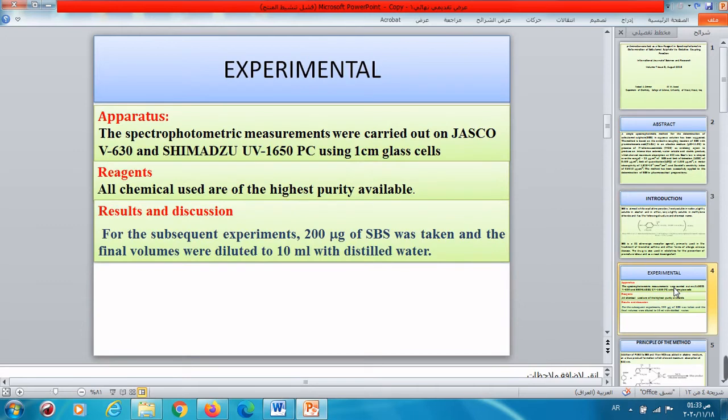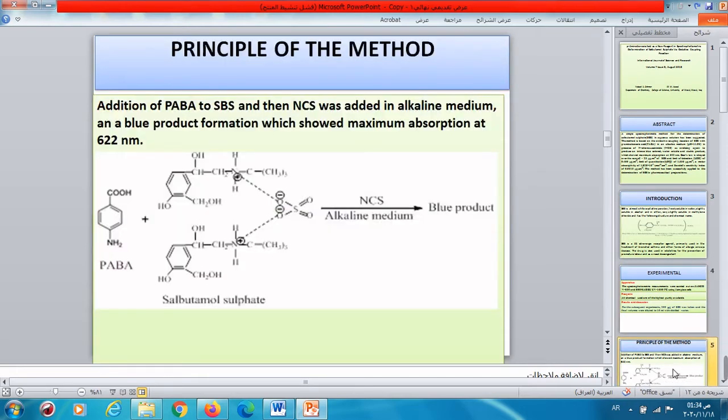Experimental. The spectrophotometric measurements were carried out in JASCO V-630 and SHIMADZU UV-1650 PC using glass cells. As in all analytical research, the chemicals used are of the highest purity available. Results and discussion: we used 200 micrograms of salbutamol sulfate in 10 ml and water is used to dilute our solutions.